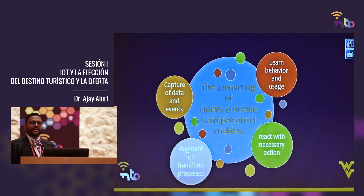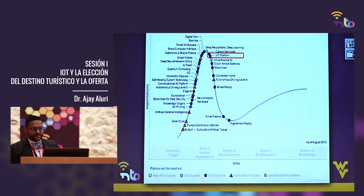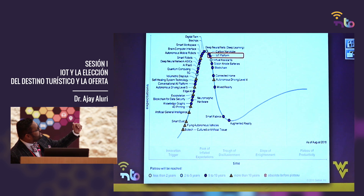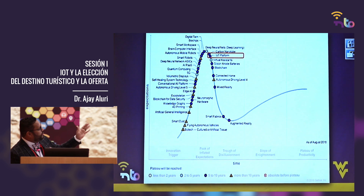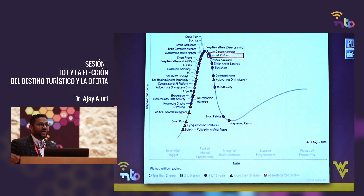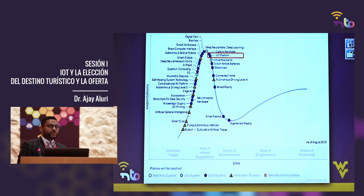According to Gartner research, IoT is at a place where people call it as being in the next five to ten years' slope of enlightenment. Gartner researches the innovation trigger, the peak of inflated expectations, the trough of disillusionment, and the slope of enlightenment — similar to innovation diffusion theory. If you look at the IoT platform, it's on the peak, which means this plateau will be reached in five to ten years, reaching mainstream customers, not just innovators and explorers.